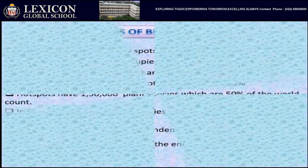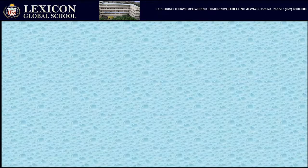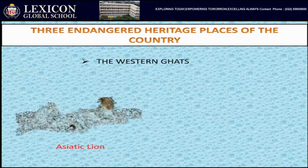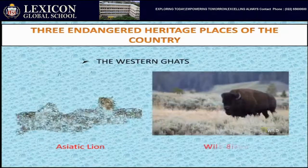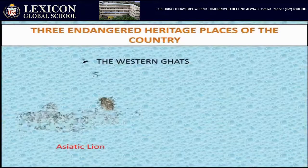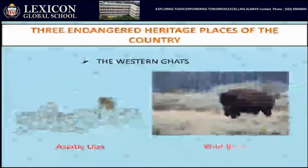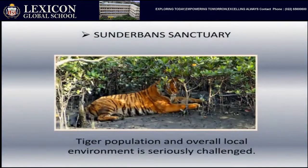Now we study about three endangered heritage places in India. The first is the Western Ghats, found in Gujarat, Maharashtra, Goa, Tamil Nadu, and Kerala. Dams, deforestation, and excessive fishing have created problems in those areas, and the population of tigers and the overall local environment is seriously challenged — as in the Sundarbans sanctuary.